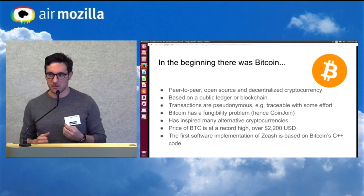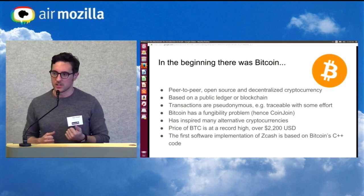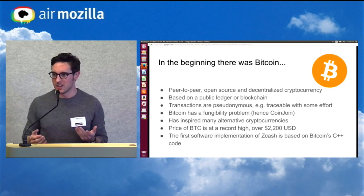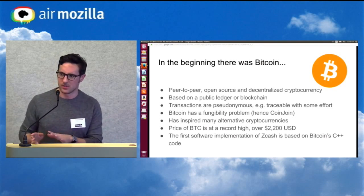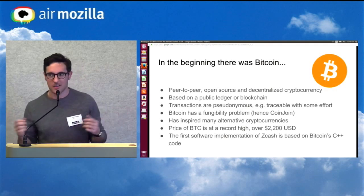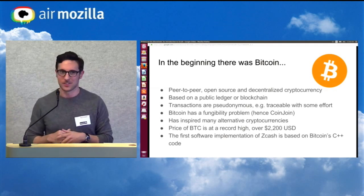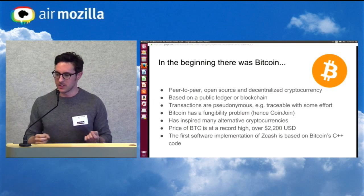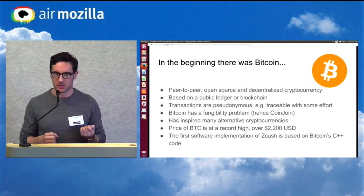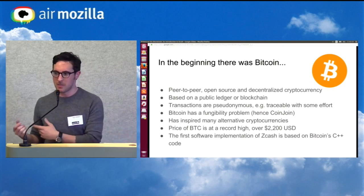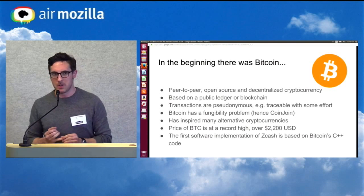Bitcoin actually has a big fungibility problem, which in essence means that if the source of coins is tainted, then you might not want anything to do with those coins — like, for example, if the coins passed through some hidden service drug market or other illicit activity. So fungibility is one of the problems that Zcash aims to solve.